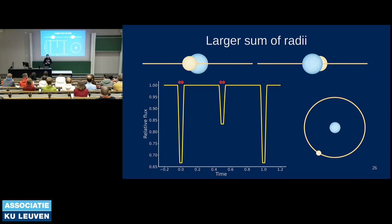Increasing the sum of radii essentially makes the time from first contact to last contact longer — both eclipses widen equally in duration. The first contact point happens earlier in the orbit because the stars, being larger relative to the orbit, come into contact sooner.